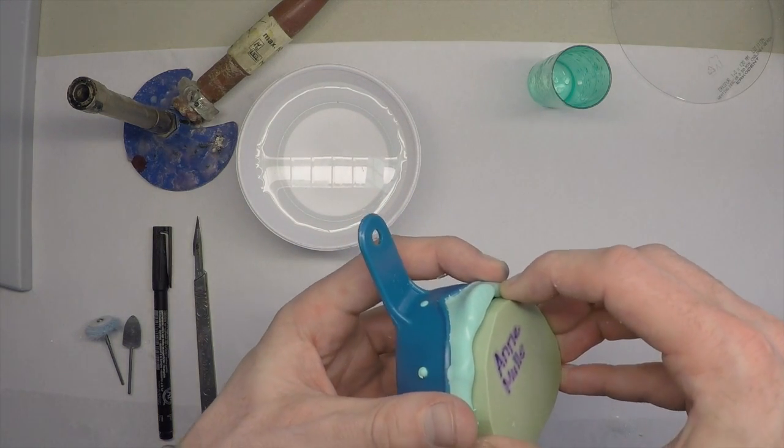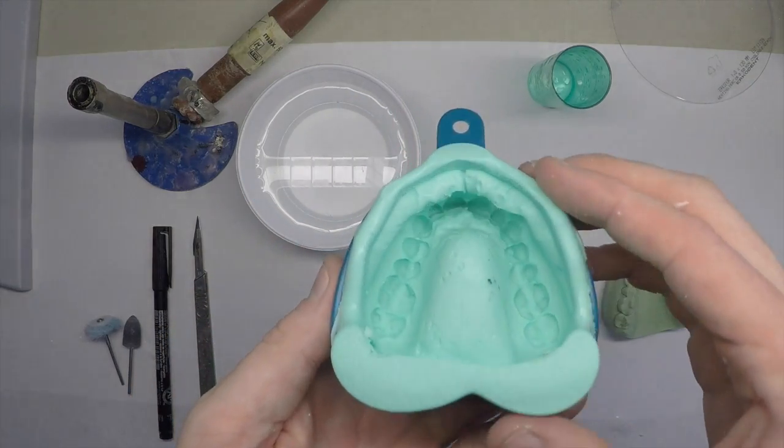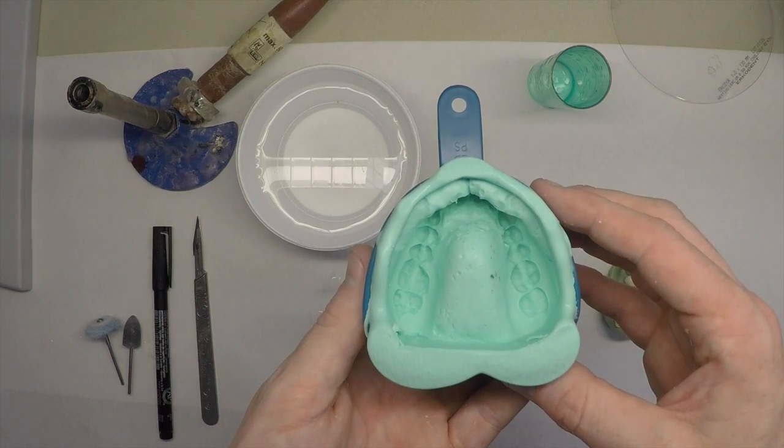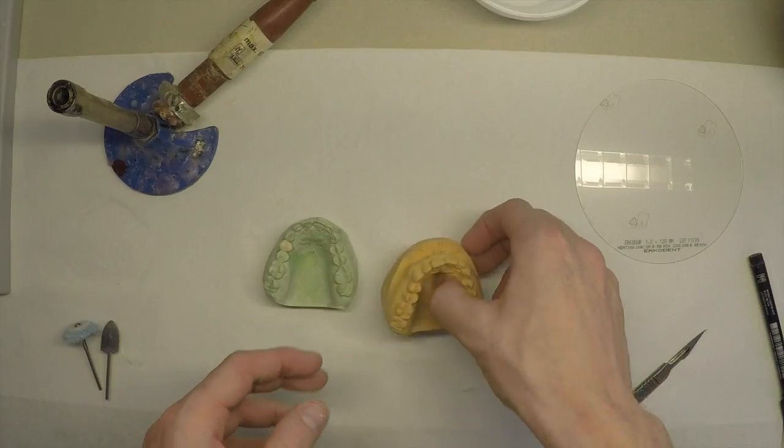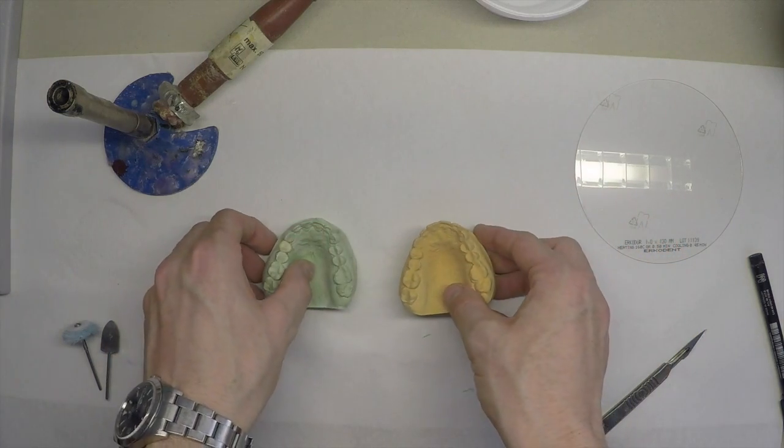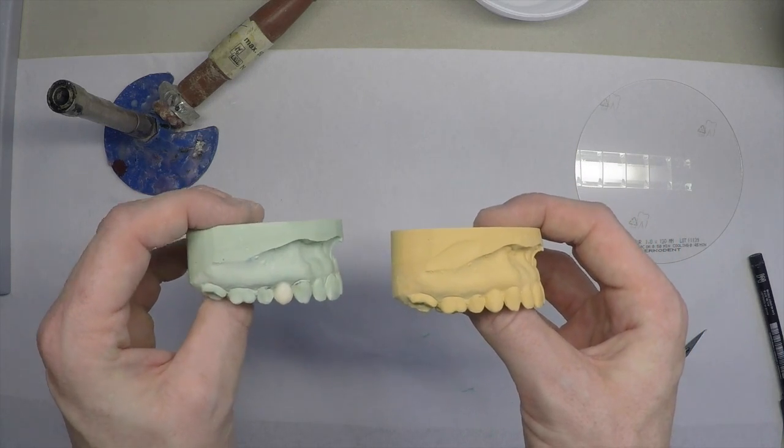Gently remove the stone model from the alginate impression, and now we're ready to pour that in type 3 dental stone. Once we've poured up the duplicate alginate, we have a duplicate model of our wax up.